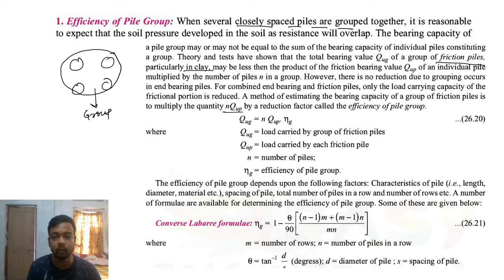Q_ug is the load carried by the group of friction piles. Q_up is the ultimate load carried by each friction pile. n is the number of piles, and η_g is the efficiency of the pile group.